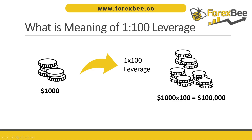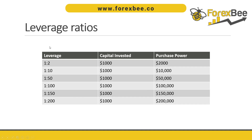There are different leverage ratios. Using 1:2 leverage with a capital investment of $1,000, your purchasing power would be $2,000. Using 1:150 leverage with $1,000 invested, your purchasing power would be $150,000.